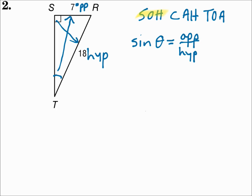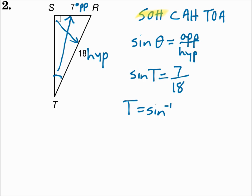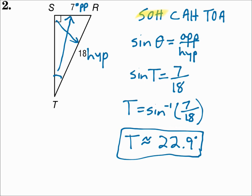Now substitute in. Theta is T, opposite is 7, and hypotenuse is 18. To solve for T, do the opposite of sine, which is the arc sine. The arc sine of 7/18. When you punch that in your calculator, you get approximately 22.9 degrees.